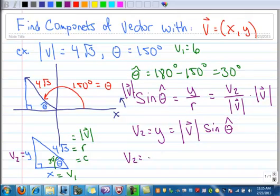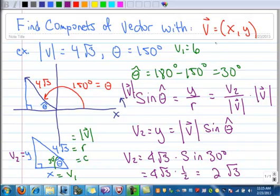So v sub 2 is going to be equal to 4 times the square root of 3 times the sine of 30 degrees. Keeping exact values. So I have 4 times the square root of 3 times 1 half. So you end up with 2 times the square root of 3. So, v sub 2 equals 2 times the square root of 3. Or, does it?